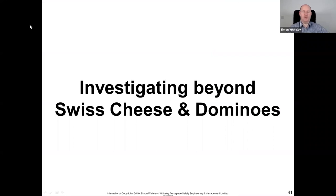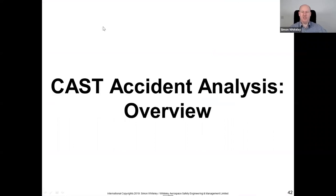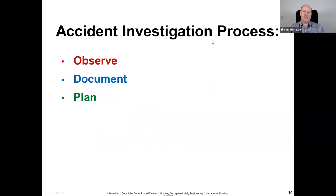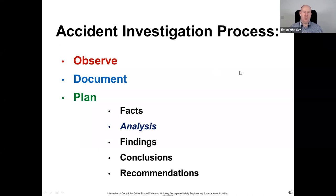CAST — Causal Analysis Based on Systems Theory — is used as part of an accident investigation process. At a high level: first you observe, then document the facts, then plan how to execute the investigation. As part of the investigation you establish facts, do analysis, generate findings, conclusions, and then make recommendations. CAST Accident Analysis fits in the analysis phase — when somebody says 'I'm going to do a CAST Accident Analysis,' they're talking about analysing the facts, not the whole investigation process.